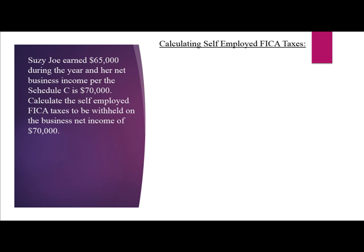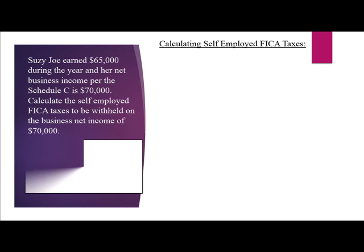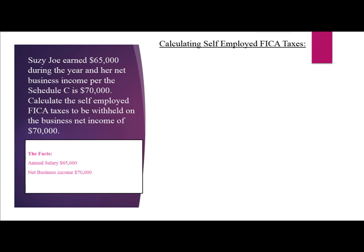An example of calculating self-employed FICA taxes. Susie Jo earned $65,000 during the year and her net business income per the Schedule C is $70,000. Calculate the self-employed taxes to be withheld on the business net income of $70,000. Let's calculate the OASDI tax.